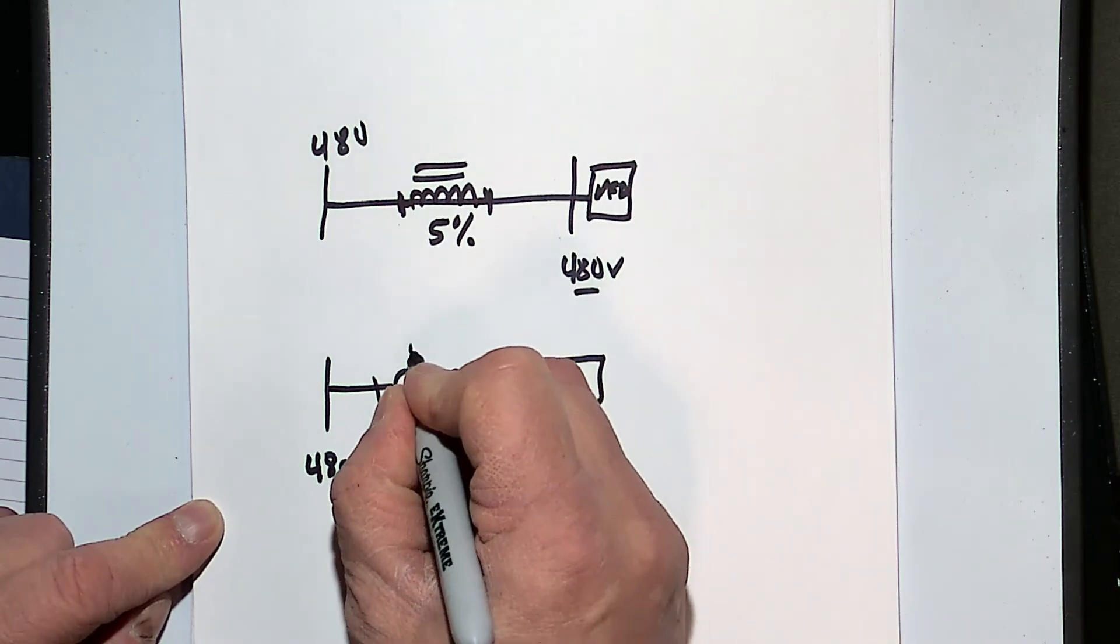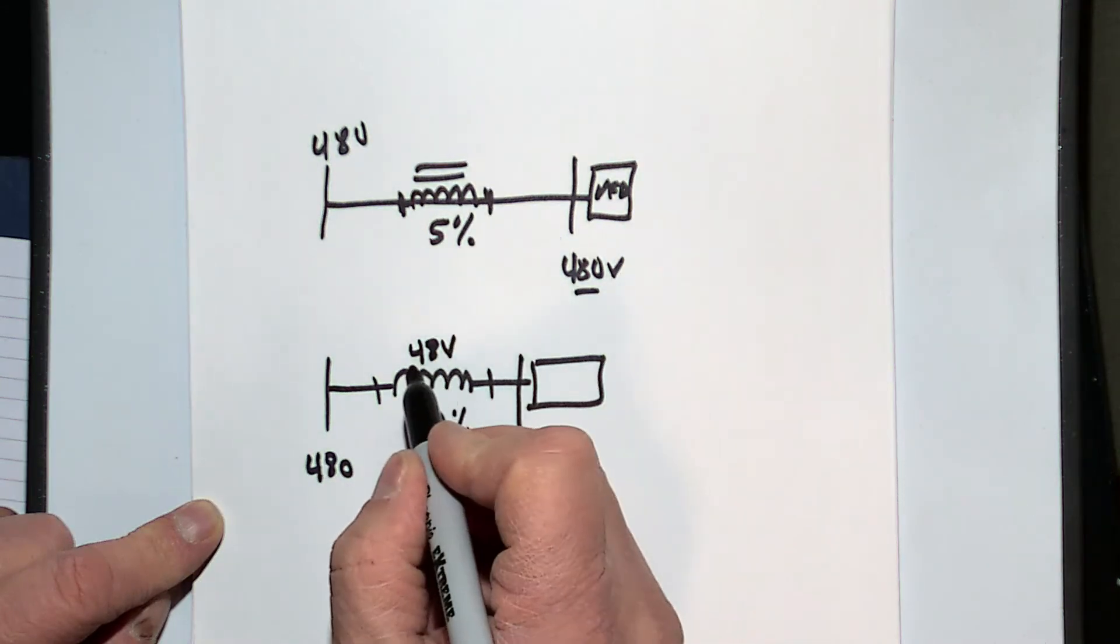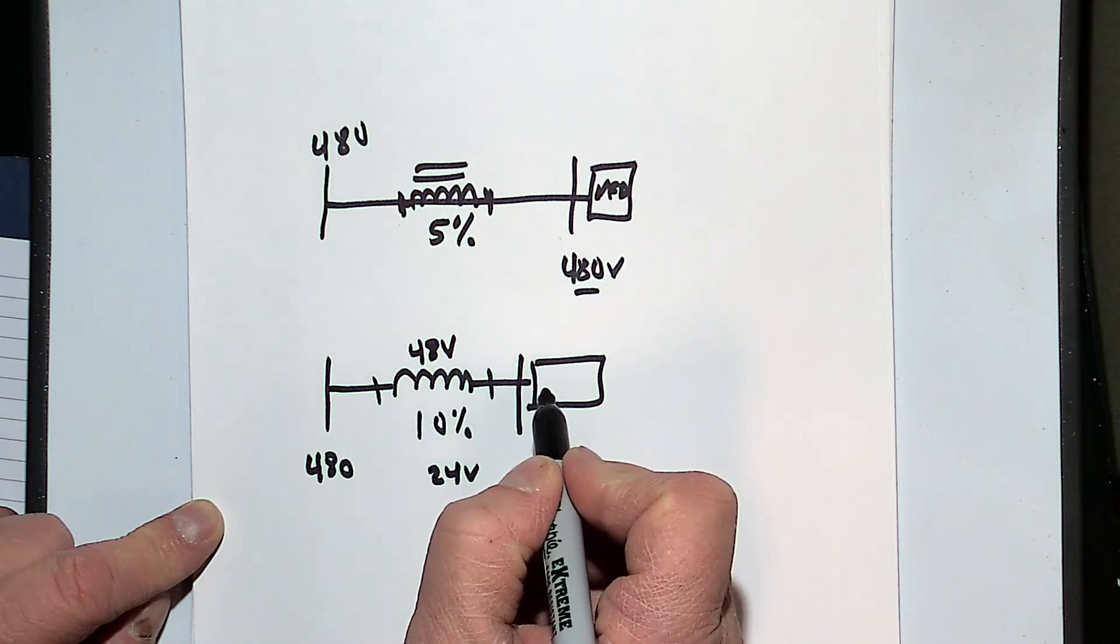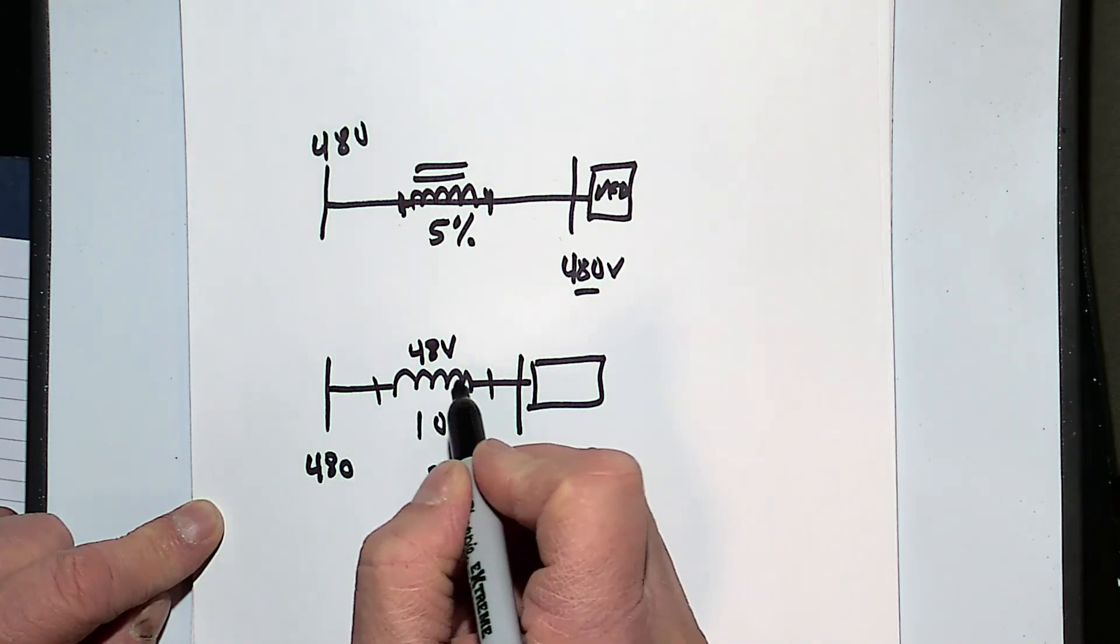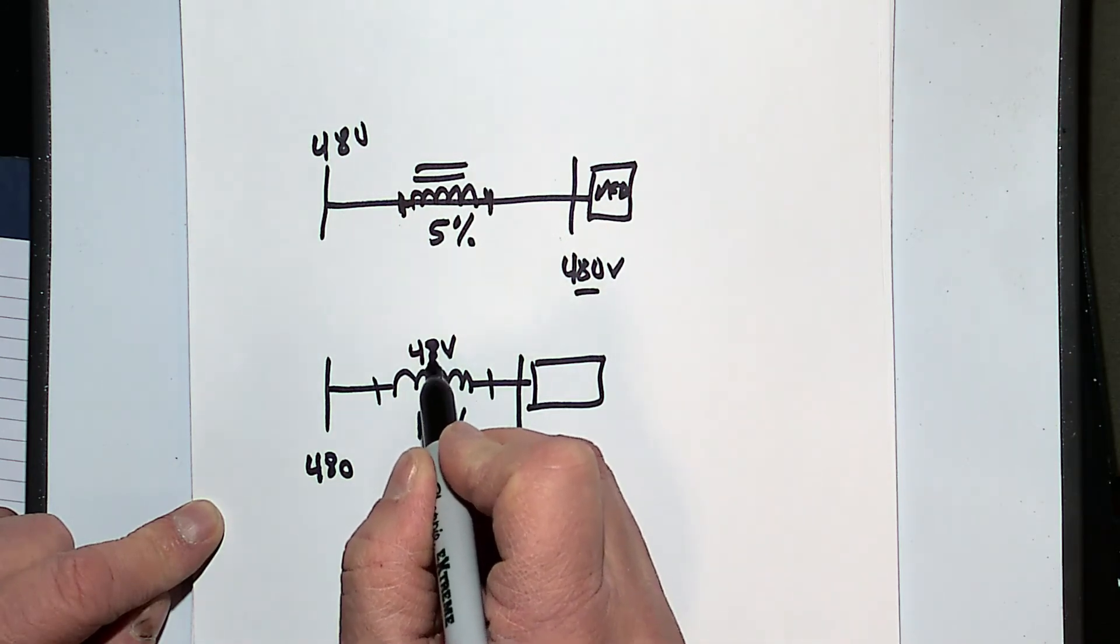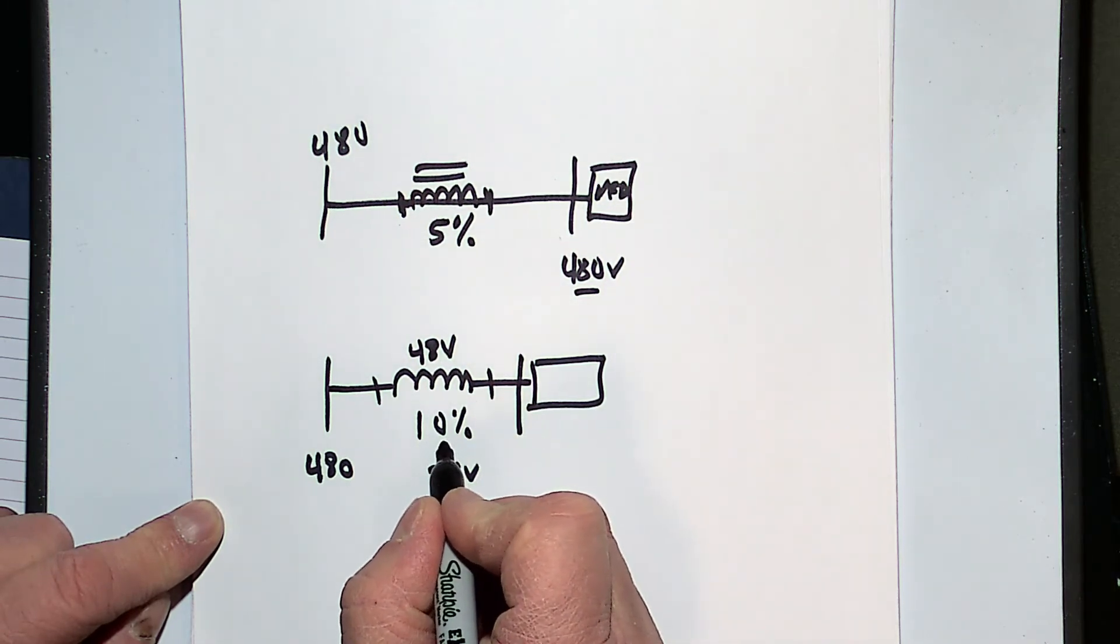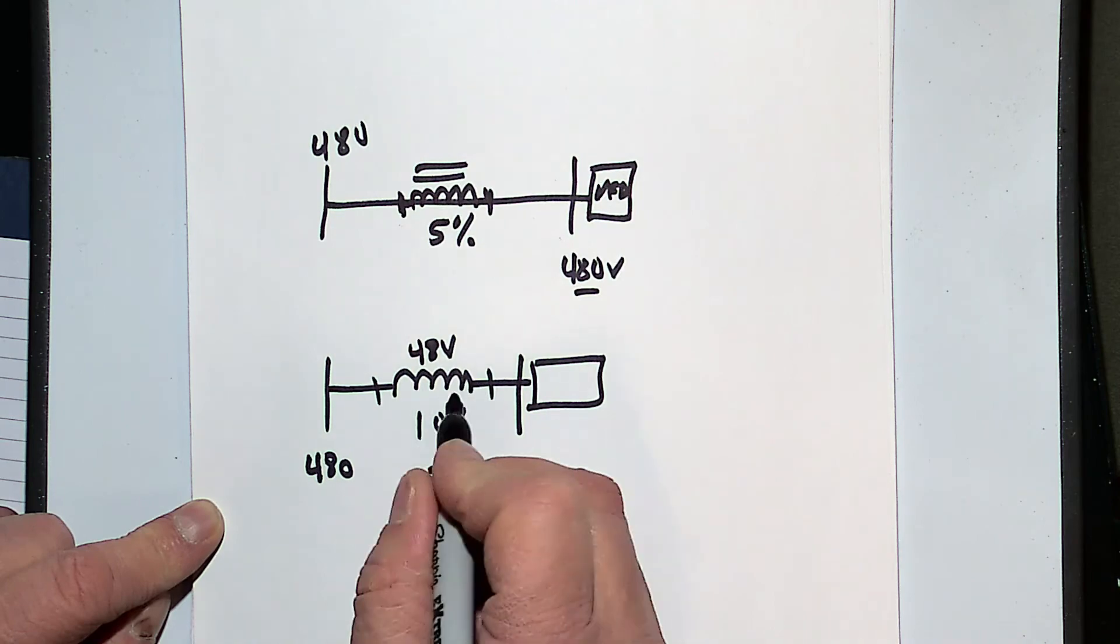But again, because it's a reactive component, the current flowing to the load here is in phase with the voltage, and the voltage drop associated with that reactive component does not give me a full voltage drop as I would with a resistor in series with it.